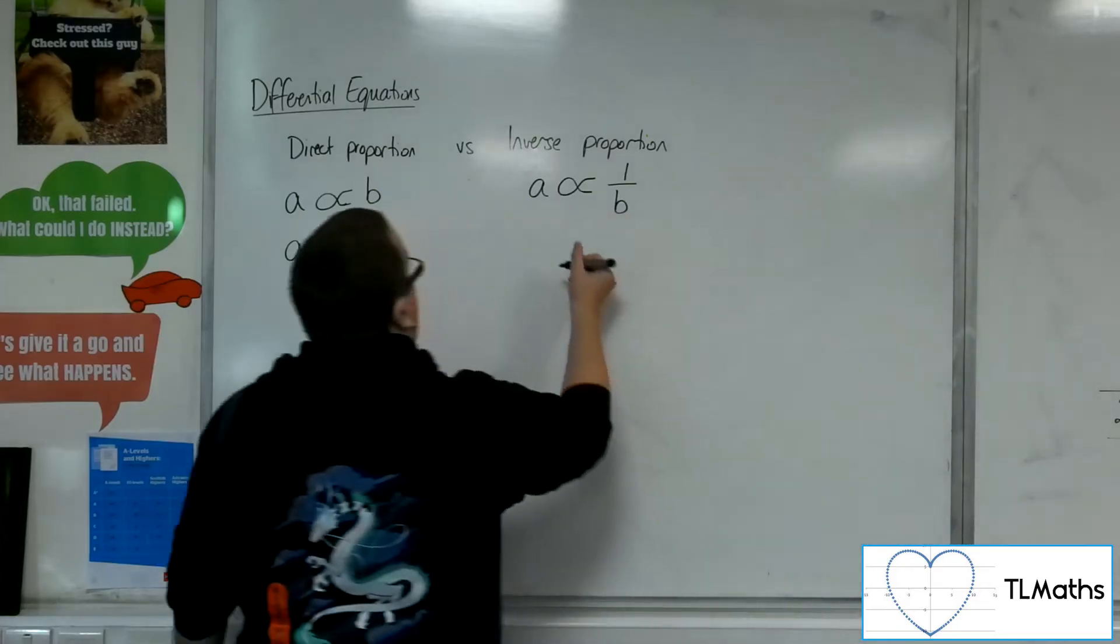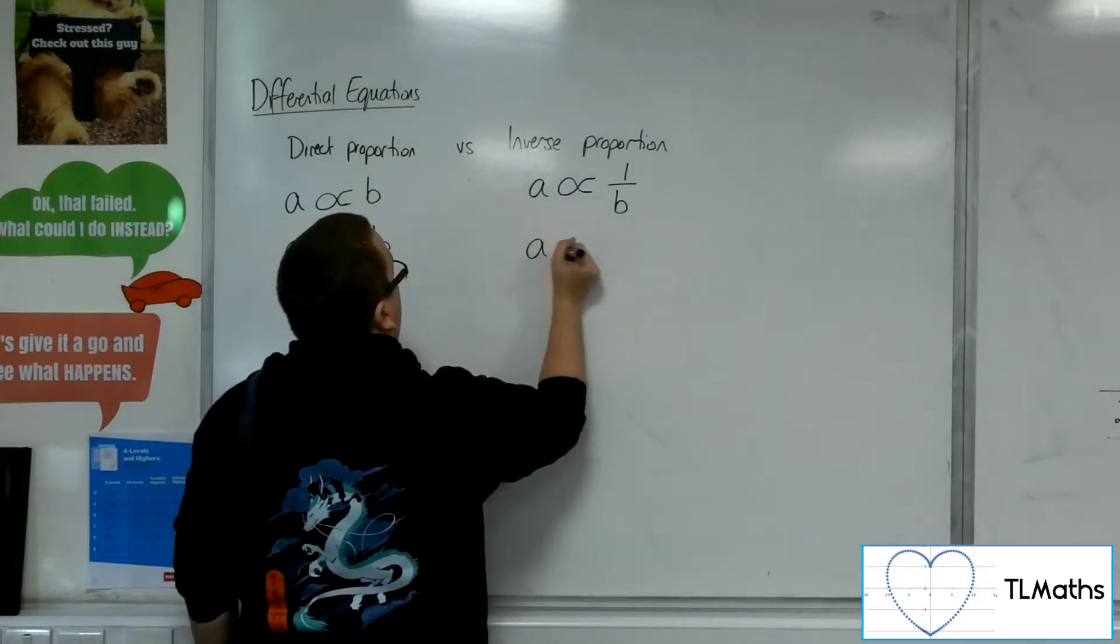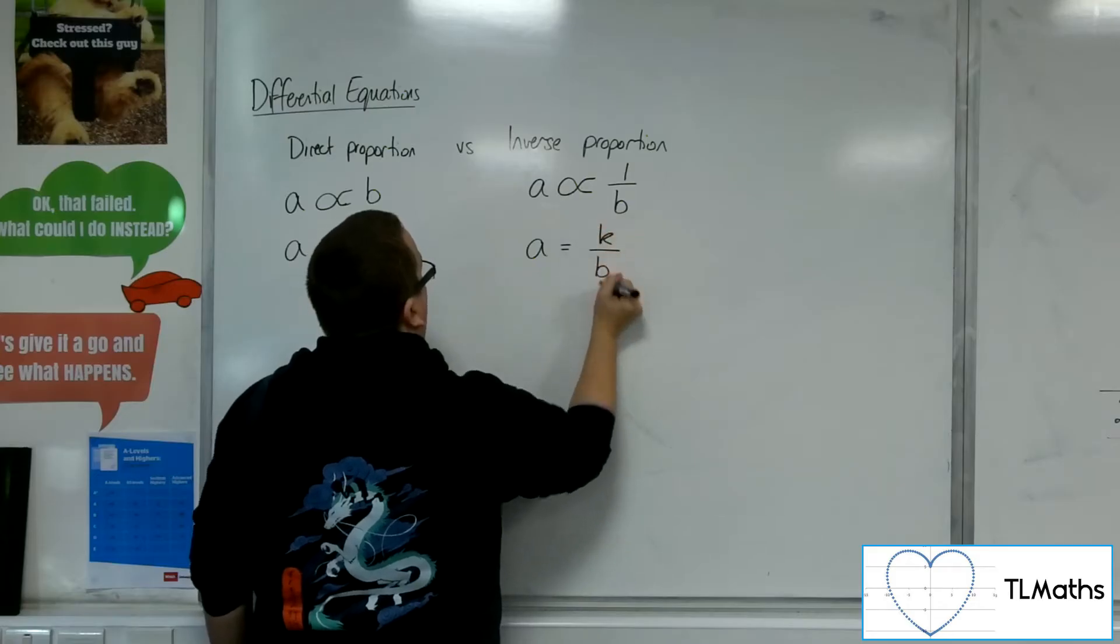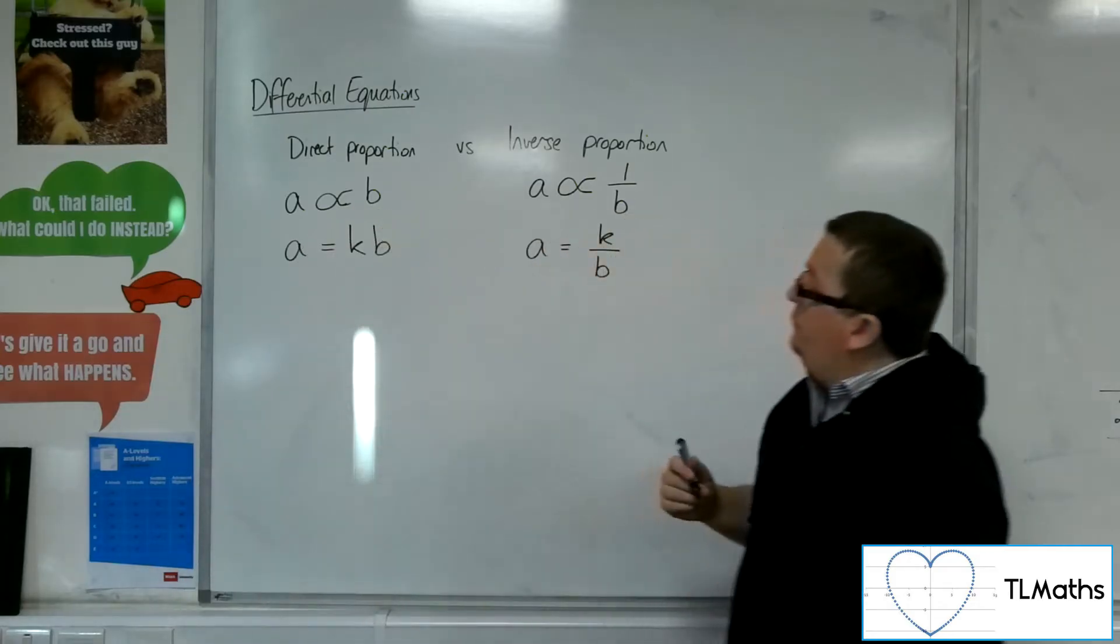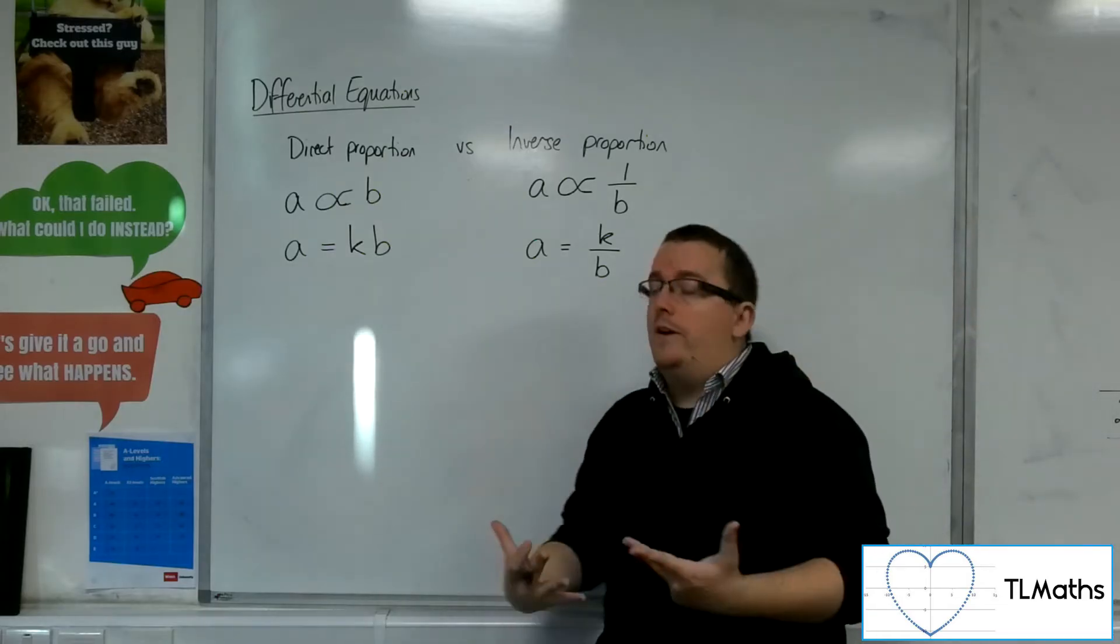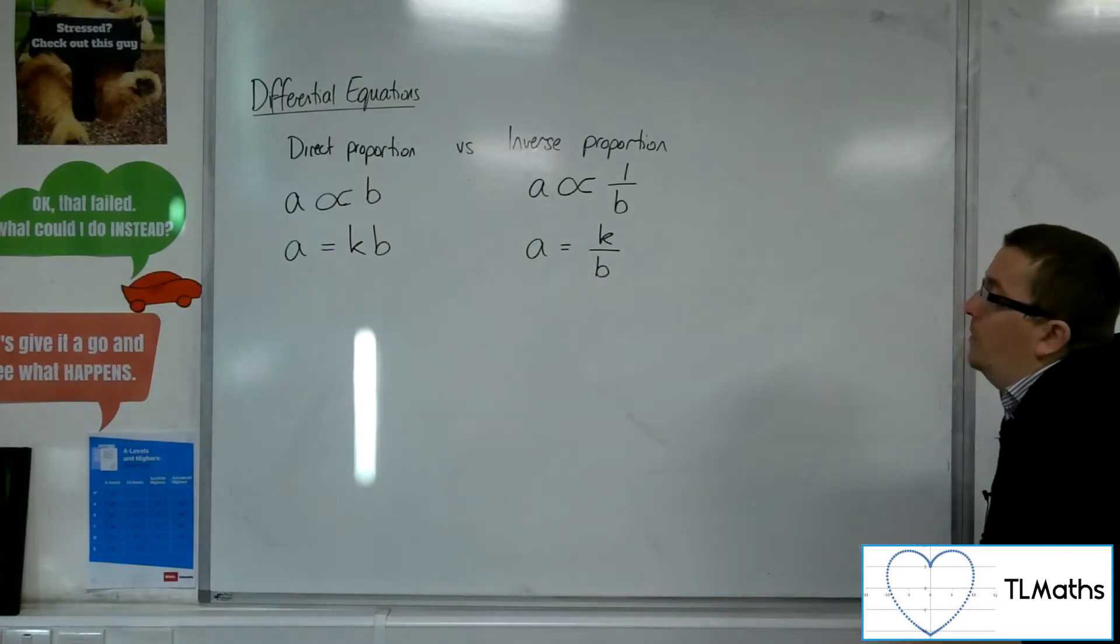So if this is the case, then we can say that A is some multiple of 1 over B. And the problem might therefore require us to figure out that value of K for that problem.